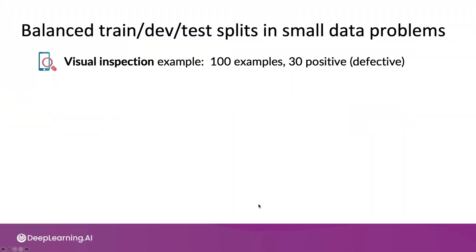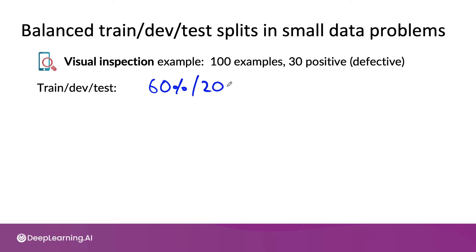Let's use our manufacturing visual inspection example. Say your training set has 100 images — so pretty small datasets — with 30 positive examples: 30 defective phones and 70 non-defective. If you were to use a train-dev-test split of 60 percent in training, 20 percent in the dev or holdout validation set, and 20 percent in the test set.